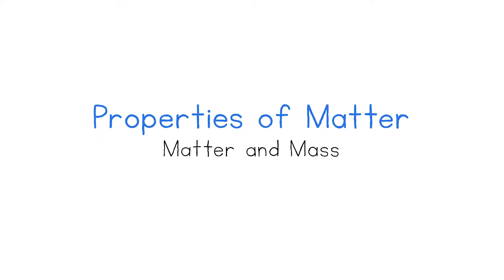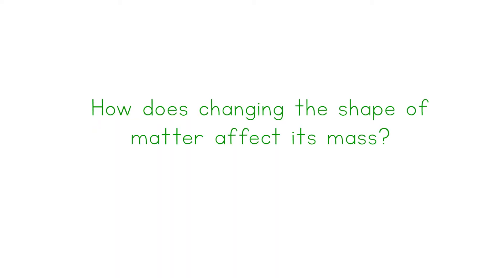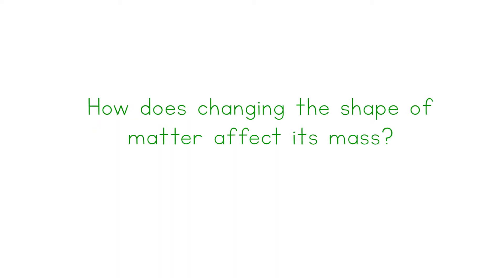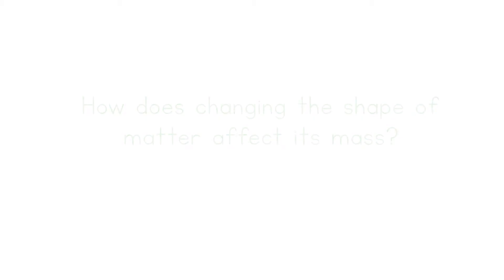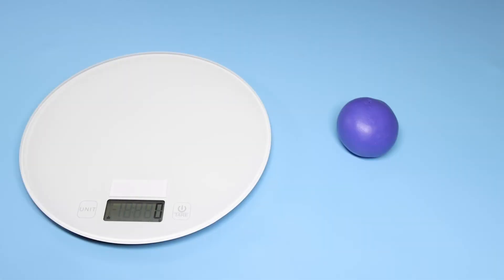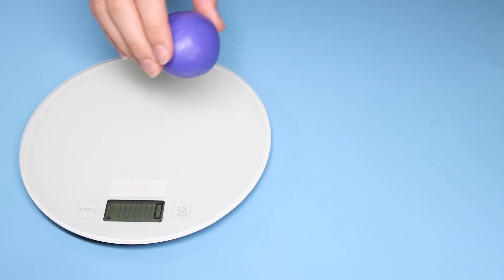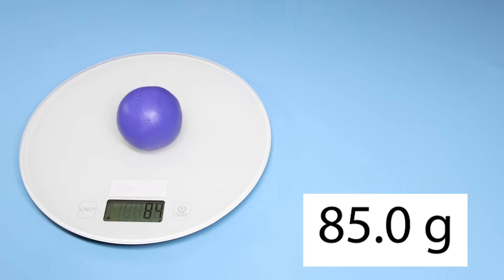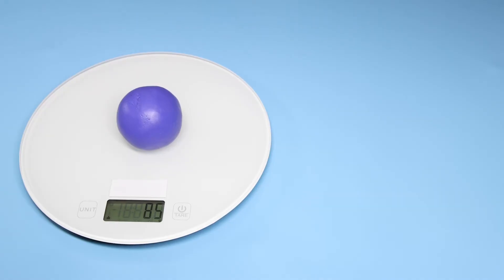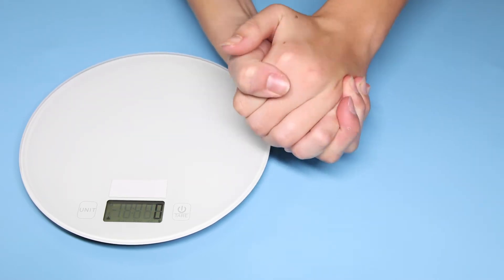Properties of matter: matter and mass. How does changing the shape of matter affect its mass? Let's use a digital scale to measure the mass of a ball of modeling clay. The ball of modeling clay has a mass of 85 grams. Let's change the shape of the modeling clay and measure its mass again.